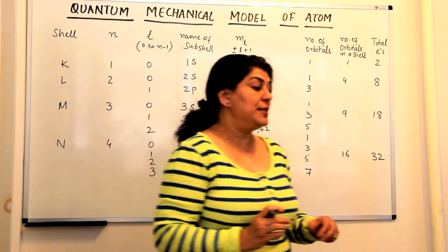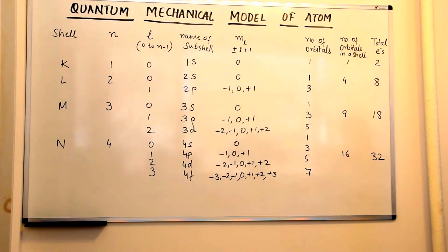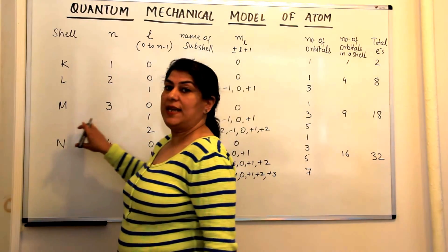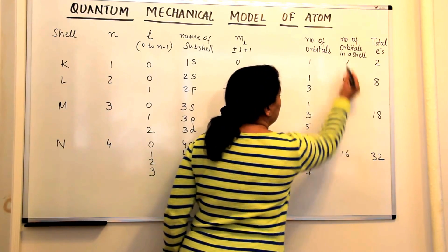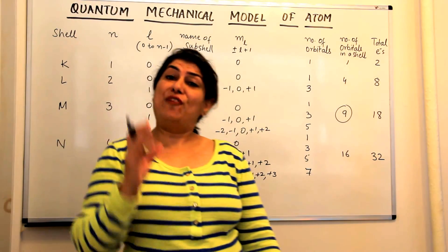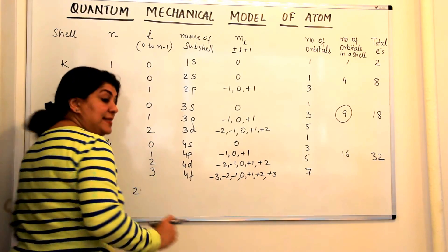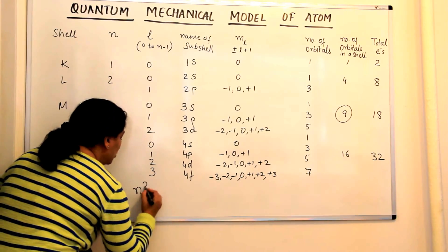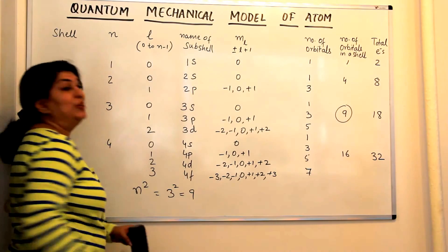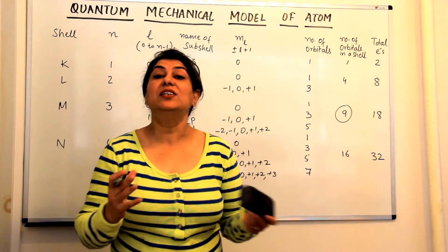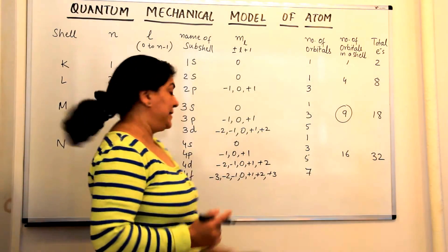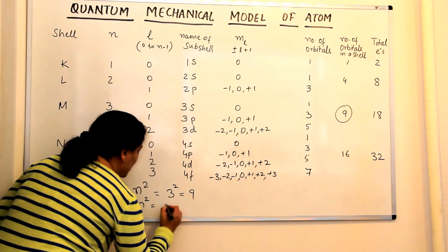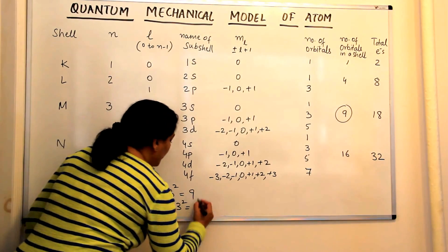Let us try to solve a problem. The question is: what is the total number of orbitals associated with the principal quantum number n equal to 3? If n equals 3, that is the M shell. The total number of orbitals is given by the formula n squared: 3 squared equals 9. The number of electrons in the third shell is given by 2n squared, which is 2 into 3 squared, equal to 2 into 9, that is 18.